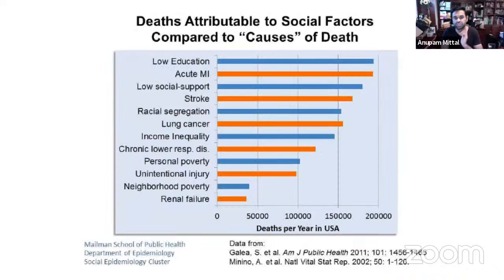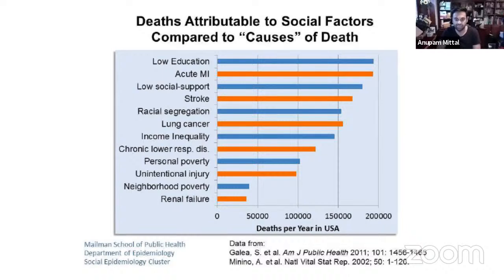Here's a chart on deaths attributed to social factors compared to causes of death. Deaths attributable to low education, low social support, racial segregation, and income inequality can be comparable in magnitude to deaths from strokes, heart attacks, and cancers. That's a pretty staggering graph, and even though this data is a few years old, it gives you the basic idea that these factors are a real problem.